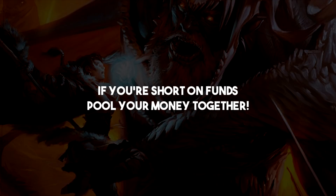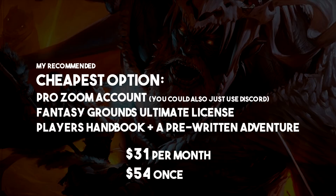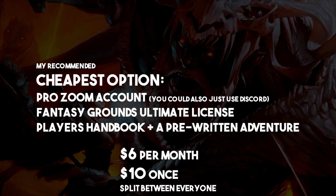If you're short on funds, you could pool money together. If you've got four players and a DM, the cheapest possible option comes out to $31 each month and a one-time payment of $54 — that's $6 each month and $10 once, split between the five of you. This is also ignoring hardware like computers, mics, and a webcam.